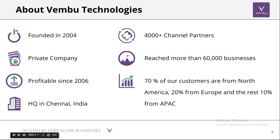Let's have a quick intro about the company profile. Wambu Technologies was founded in the year 2004. We are a private company, profitable since 2006, and headquartered in Chennai, India. We have 4,000 plus channel partners and have reached more than 60,000 businesses so far. 70% of our customers are from North America, 20% from Europe, and the rest 10% from the Asia Pacific region.